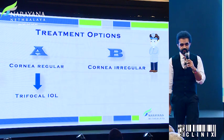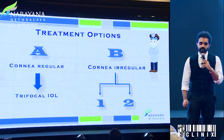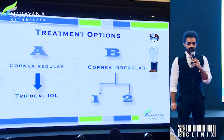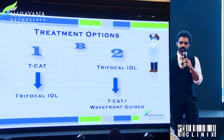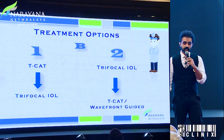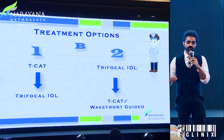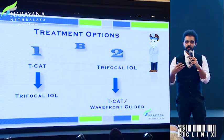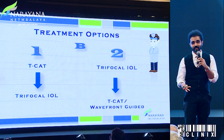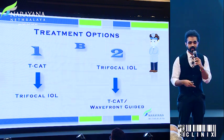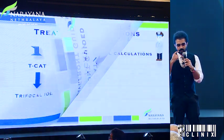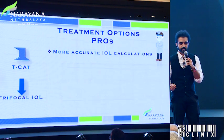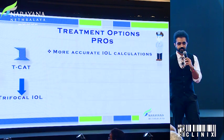When we look at the problematic option where the cornea is not ideal and we have a lot of irregularities, we have two options. The first option is where you do a topo-guided treatment, regularize the cornea, and then do a trifocal IOL. The second option — not the most ideal — is where you do the trifocal IOL first and then plan either a topo-guided or wavefront-guided treatment. Let's look at the pros and cons of each with an open mind.